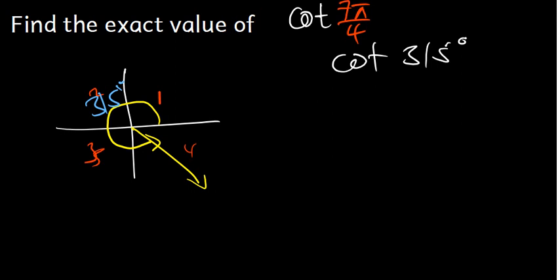The terminal angle is the angle between the x-axis and the point of interest. The x-axis is here, so from the x-axis all the way to the terminal side is our terminal angle. To find it, we say 360 minus 315, which gives us 45. So 7π/4 corresponds to a reference angle of 45 degrees.